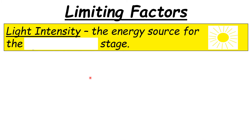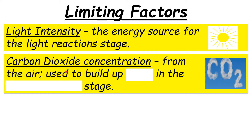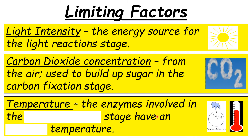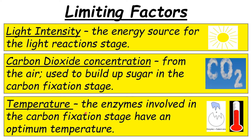The three limiting factors are: first, light intensity — the energy source for the light reaction stage, which is why plants barely grow in winter; second, carbon dioxide concentration — needed from the air to make sugar in the carbon fixation stage; and third, temperature — the enzymes involved in carbon fixation have an optimum temperature, and if temperature is not at the optimum, plant growth will be reduced.